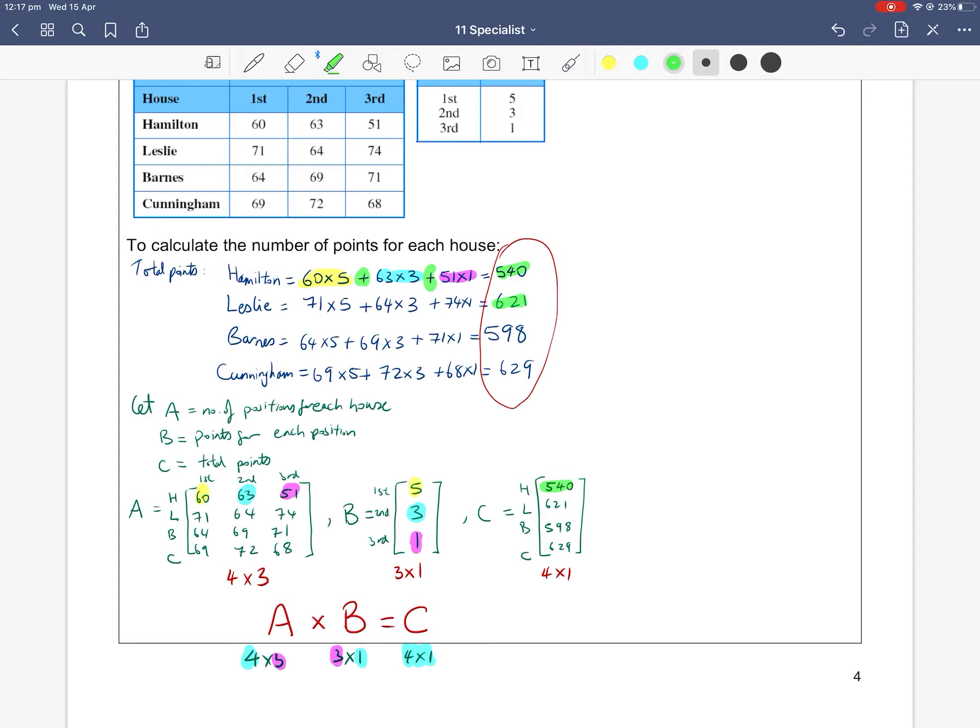So similarly, how did we get the 621? Well, we went 71 times five. And then our next entry was 64 times three. And then the next entry was 74 times one. And then you added them together. And then you got, at the end, 621 points in total. So that's really how we multiply matrices.